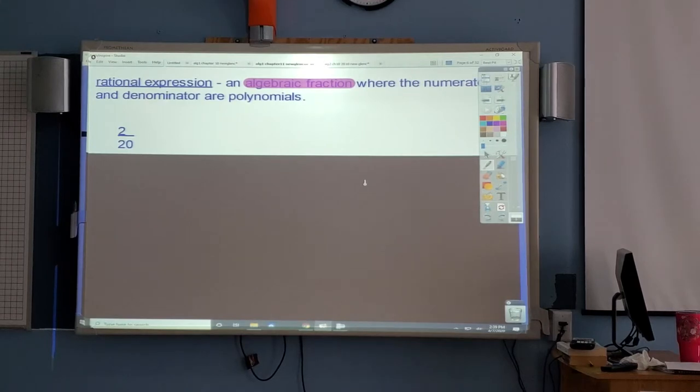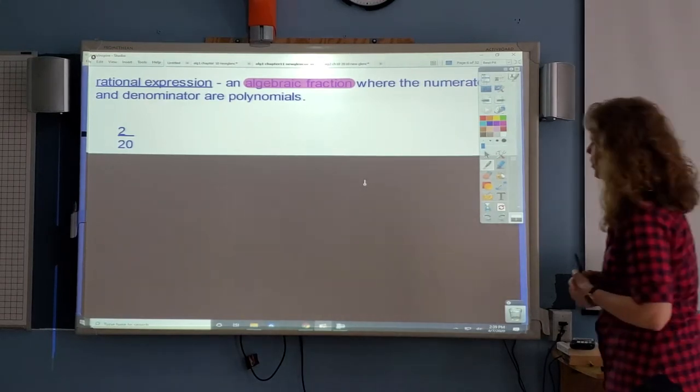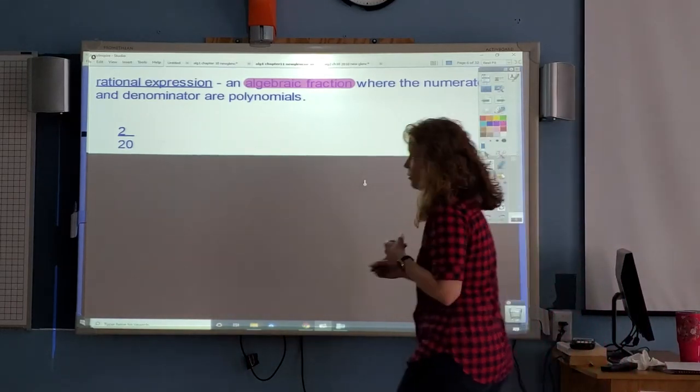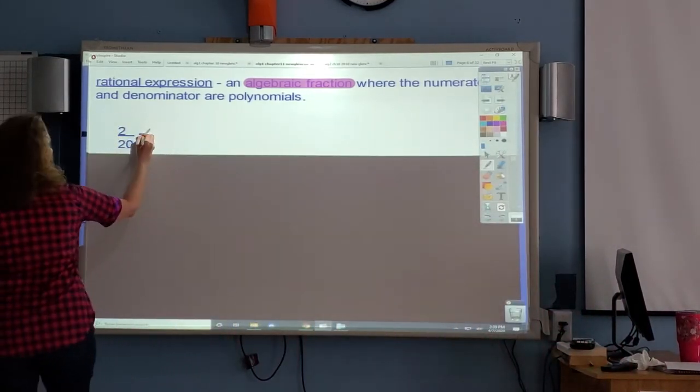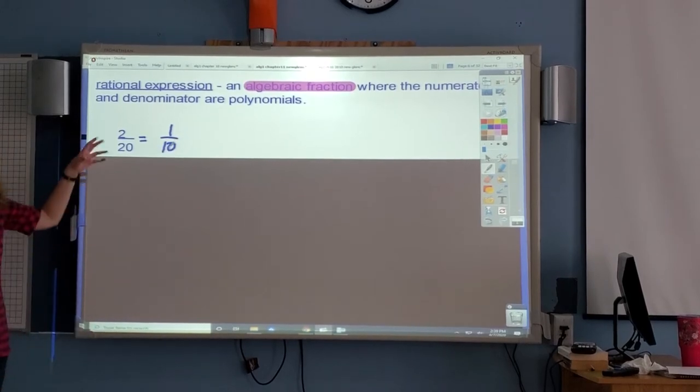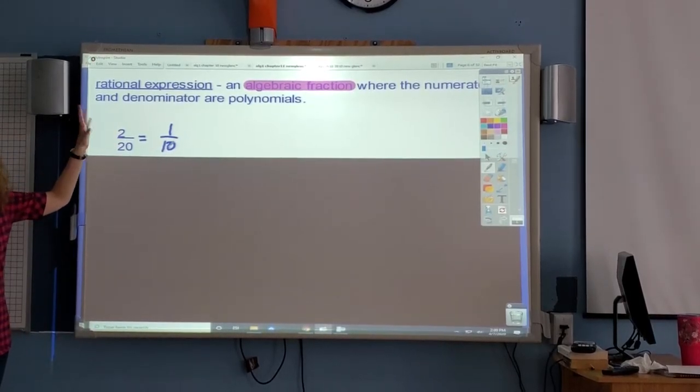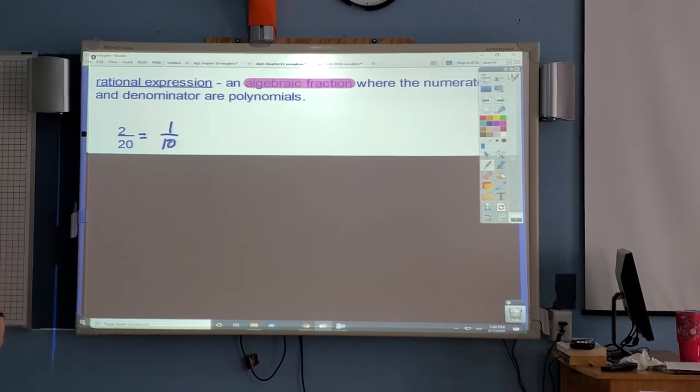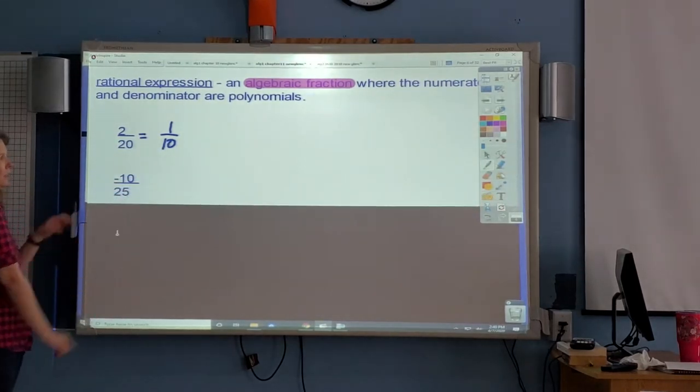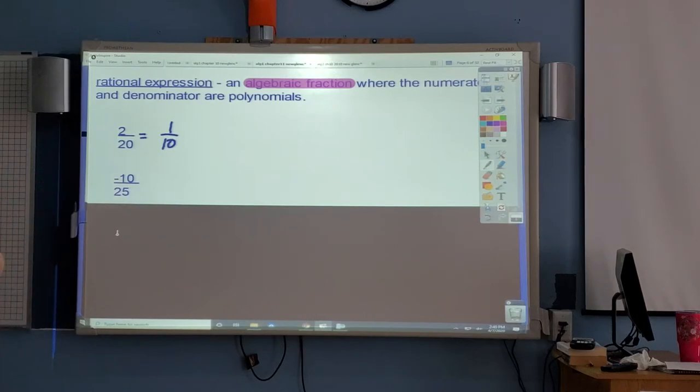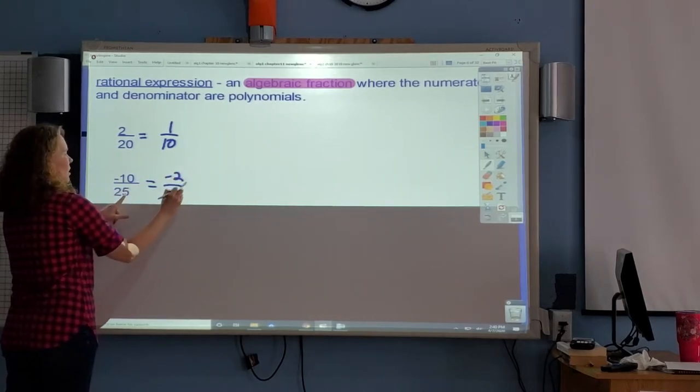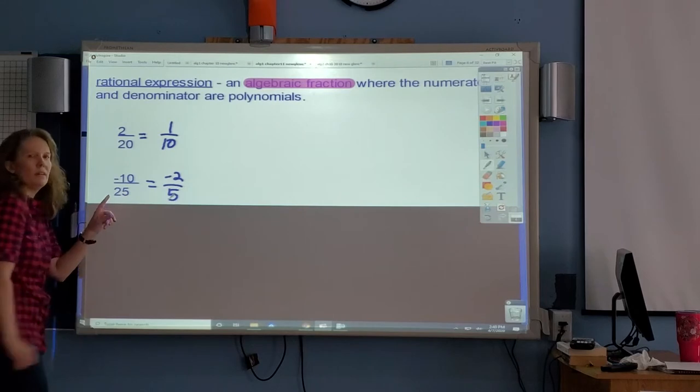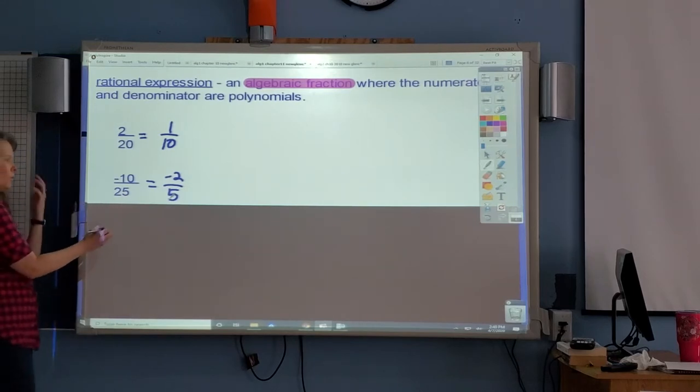I want to start back with good old fractions, how to reduce them. So 2 over 20, you would reduce both by 2, and it would be 1 over 10. What you're doing is you're looking at what they have in common. Both had 2, so you divide both by 2. Look at both those numbers, they both have a 5. So if you divide this by 5, you get negative 2. Divide this by 5, you get 5. You're looking for what's in common with both the top and the bottom.